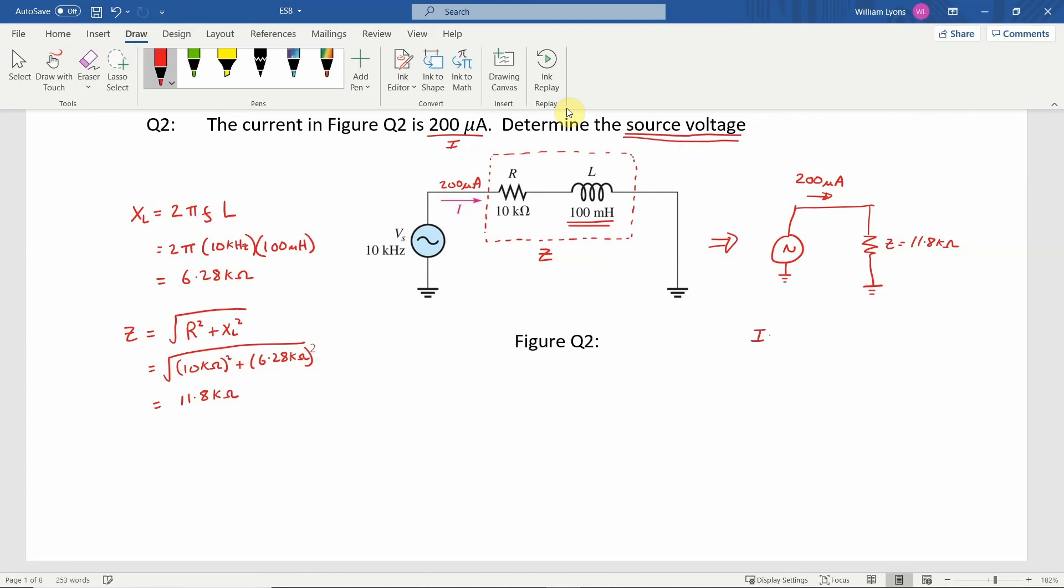We know that I is equal to 200 microamps, Z is equal to 11.8 kilo ohms.